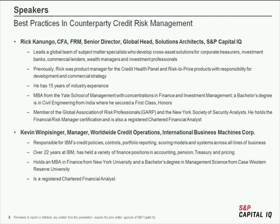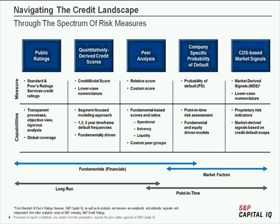Before turning it over to Rick and Kevin, I want to set the backdrop on how we think about credit risk. There's a spectrum in which we assess credit — whether you're doing surveillance, origination, or supply chain credit risk management within a corporation. Sometimes there's a need for looking longer term, sometimes more point-in-time. On the far left of the spectrum you have fundamentally driven, longer-run capabilities for assessing credit. On the far right you have more market-driven, point-in-time measures.